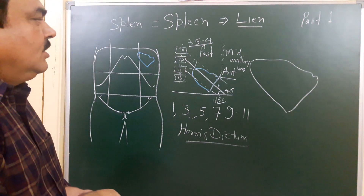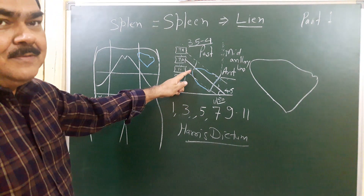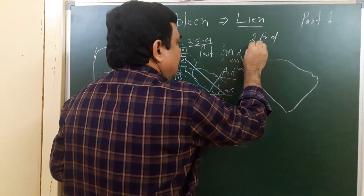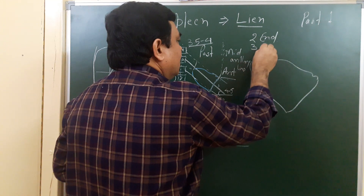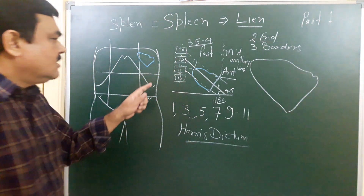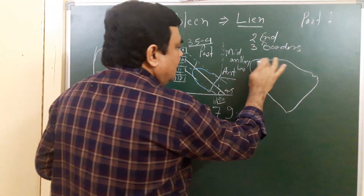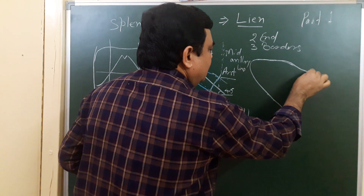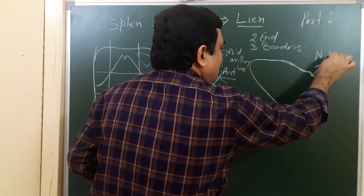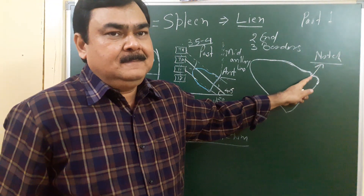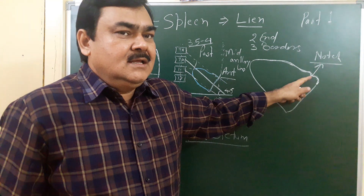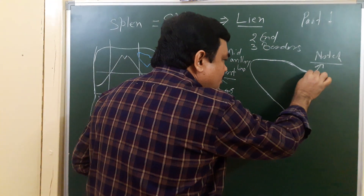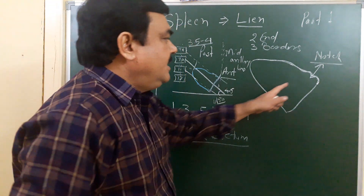The spleen has two ends and three borders. The three borders are: the superior border, which has a notch called the splenic notch — this notch indicates that the spleen develops from several lobules that are incompletely fused at the superior border. The other two borders are the inferior border and the intermediate border.